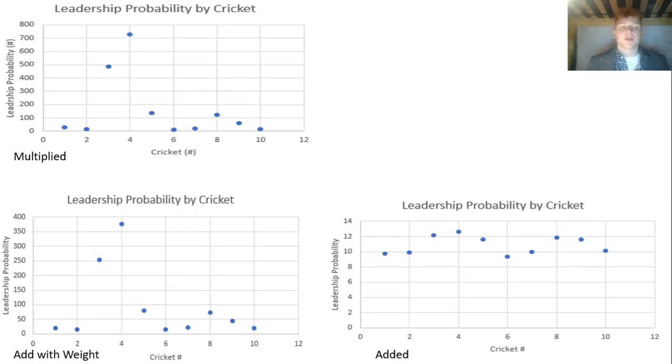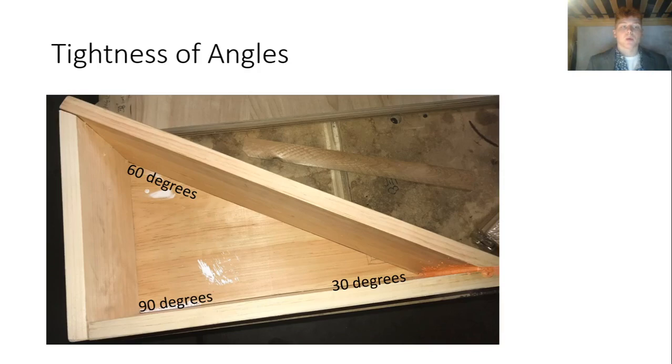If that wasn't conclusive enough, I made the graphs and you can see here when I multiplied the values and when I added the values with the weights to them, the graph has the exact same shape. However, when I added them together alone, the numbers were a lot smaller so they were a lot closer together. However, the order remains intact, so I can now properly rank leaders amongst these crickets, which allows me to now get into my test regarding cricket leadership.